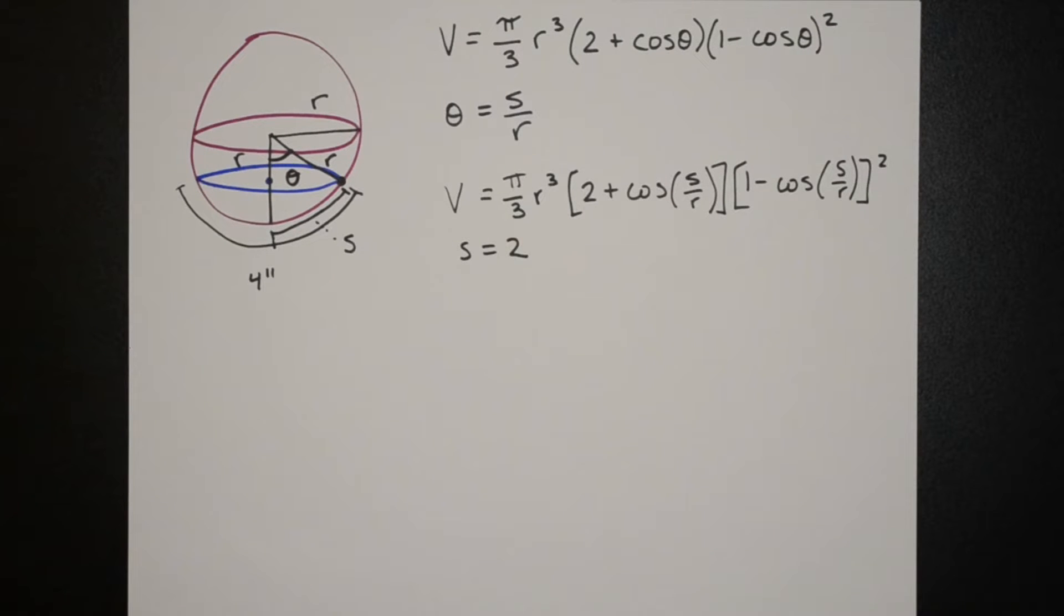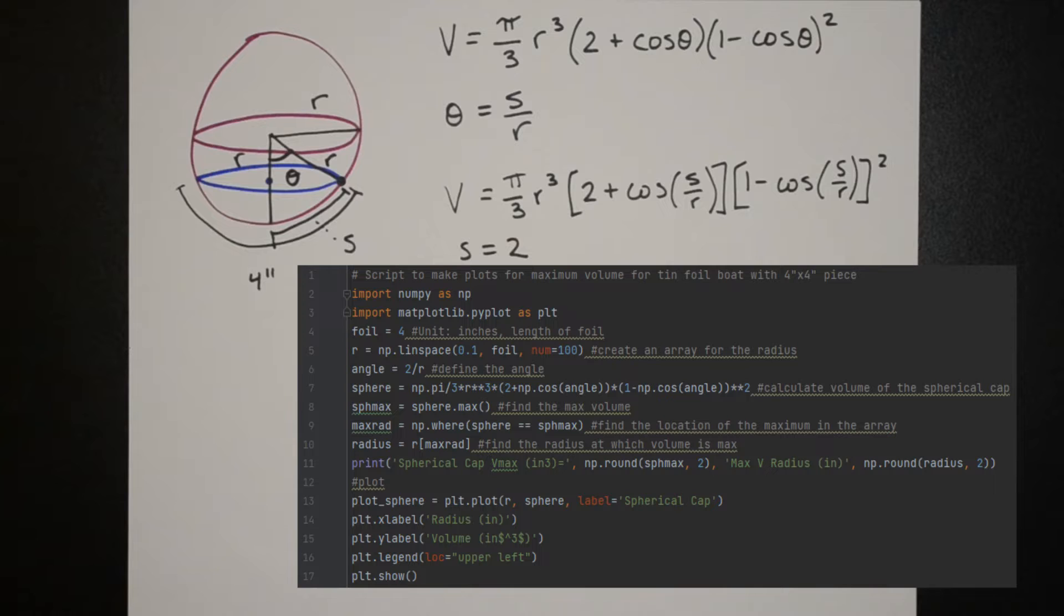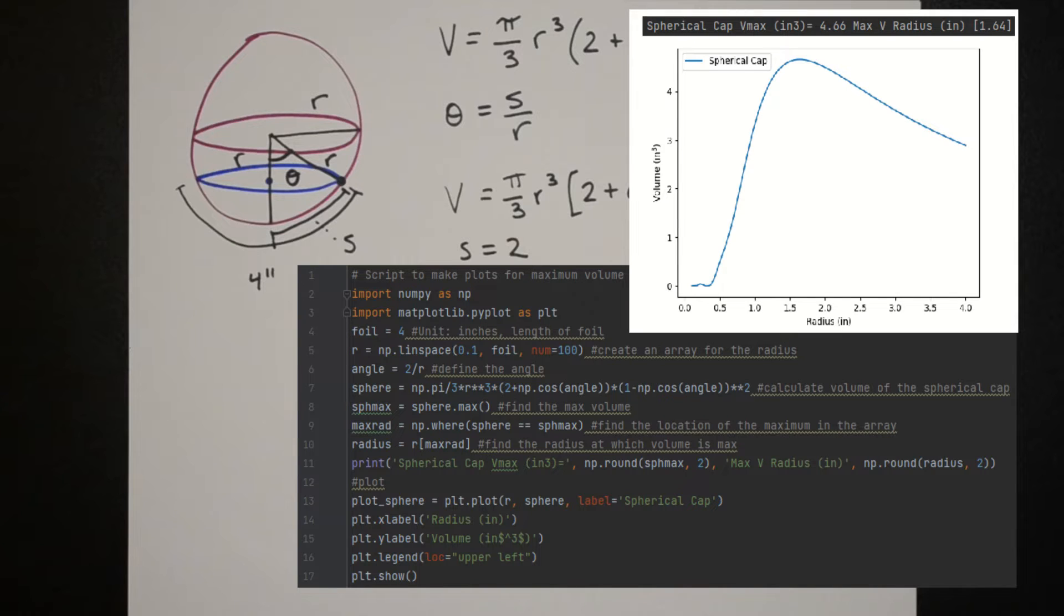So now we have volume as a function of a single variable which will be the radius and we can use our approximate solution to find the maximum volume as well as the radius at the maximum volume. So for the spherical cap we have a maximum volume of 4.66 inches cubed and that's at a radius of 1.64 inches.